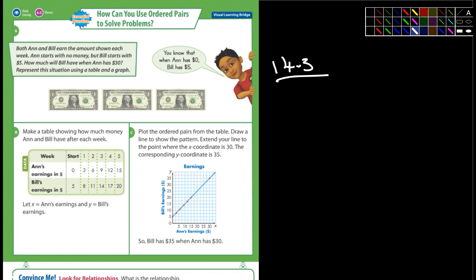It says represent the situation using a table and a graph. So here's the table and here's the start, and these are the weeks right here, one, two, three, four, five. So at the start Ann had zero, Bill had five. At week one Ann had three and Bill had eight. Week two Ann had six and Bill had eleven. You can see how this works.